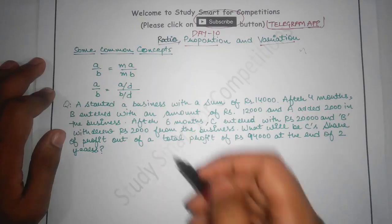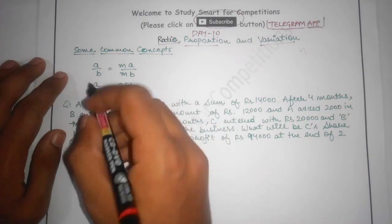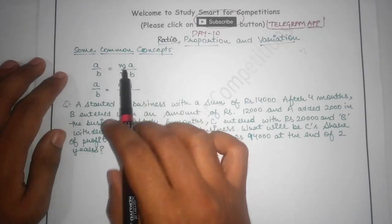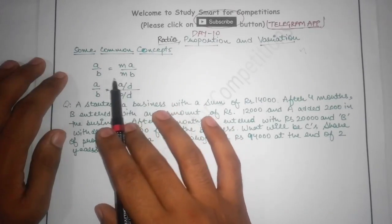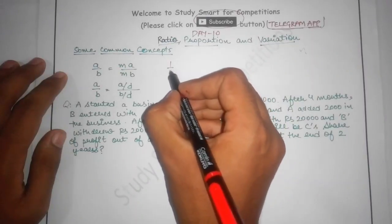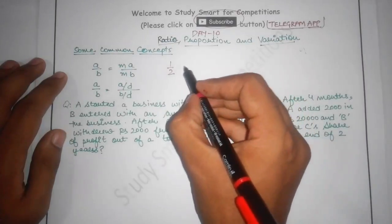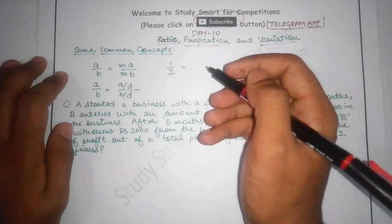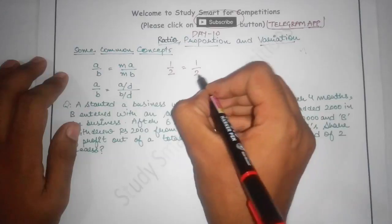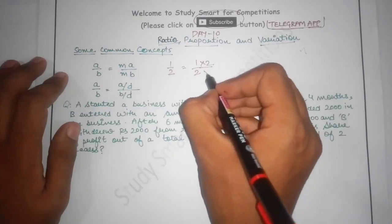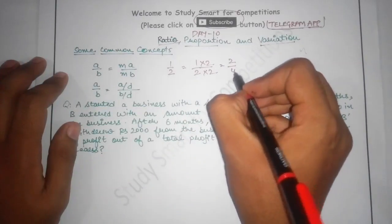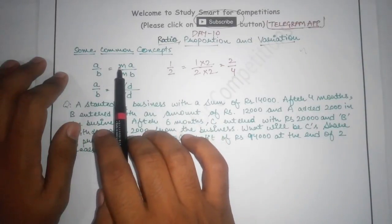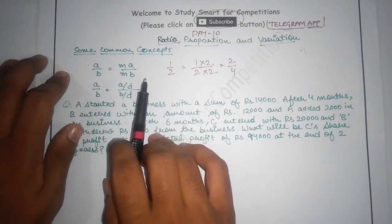We will start with some common concepts. If a proportion is given as A over B, it can also be written as MA over MB. For example, if we have a ratio 1 by 2 and we multiply both numerator and denominator by 2, it becomes 2 by 4, which is still 1 by 2. Multiplying by M doesn't make any difference.